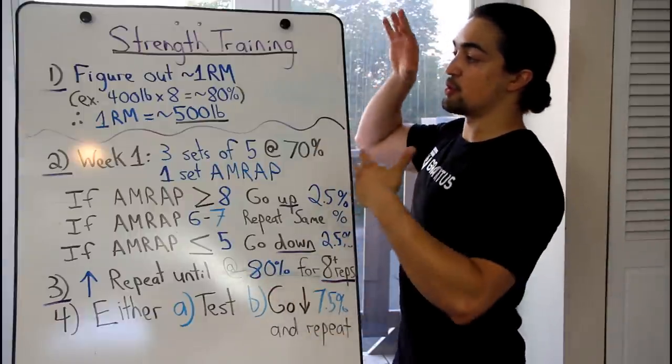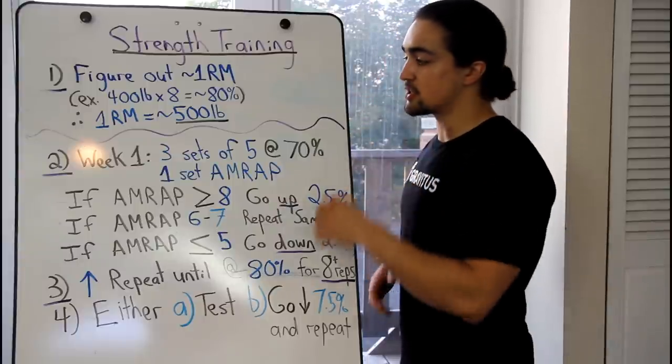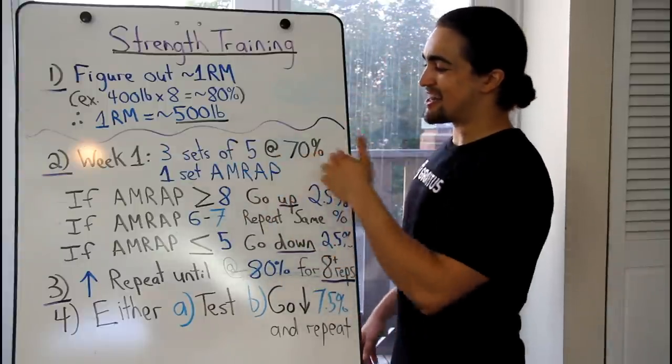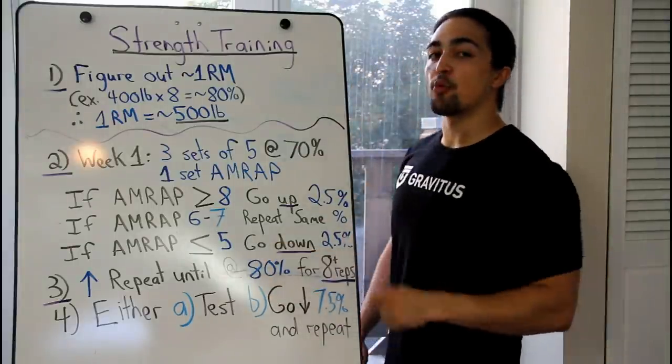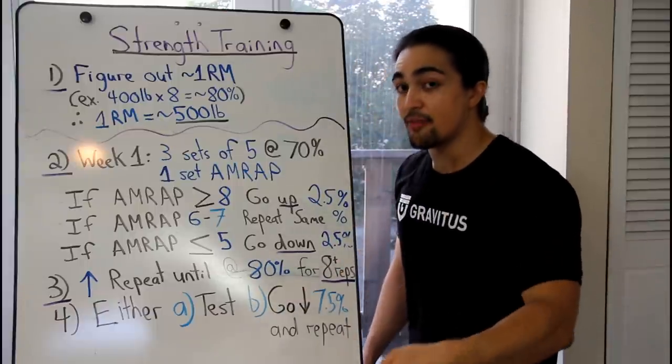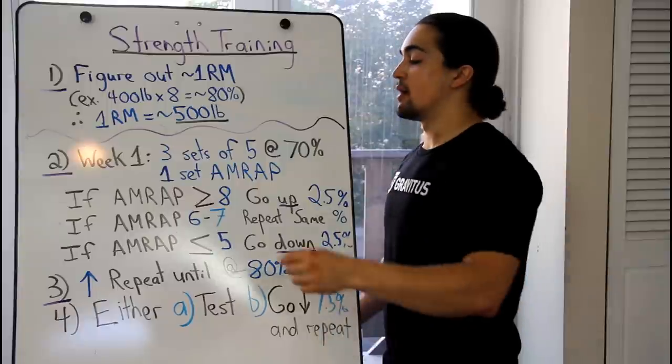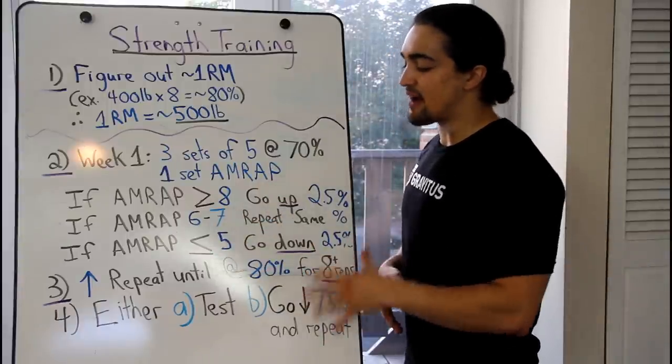What I would recommend for the majority of you guys out there is take 16 weeks to build strength. So essentially, you do weeks one through five, 70 to 80%, deload down to 72.5%, work your way back up to 82.5%, as long as you get those eight repetitions, deload back down now, this time to 75%, work your way back up to 85%.